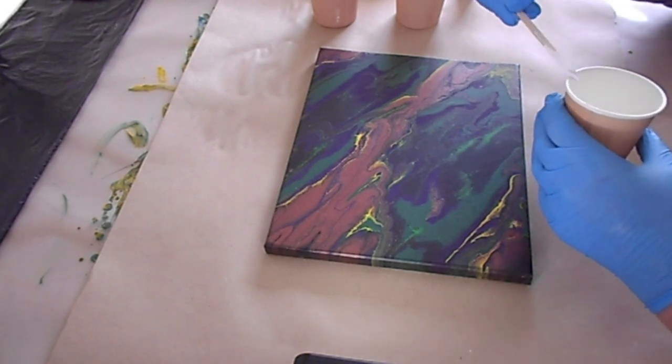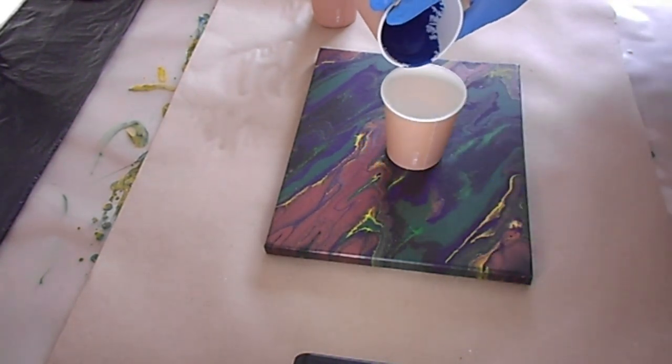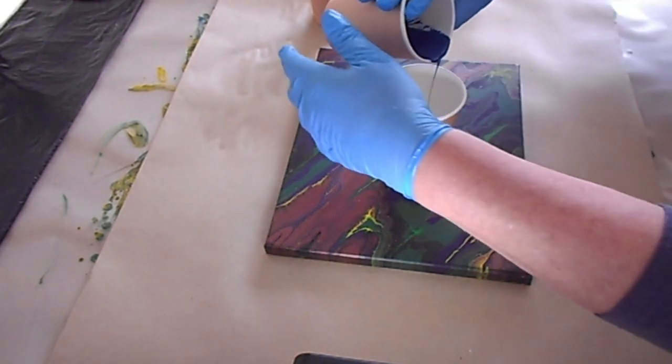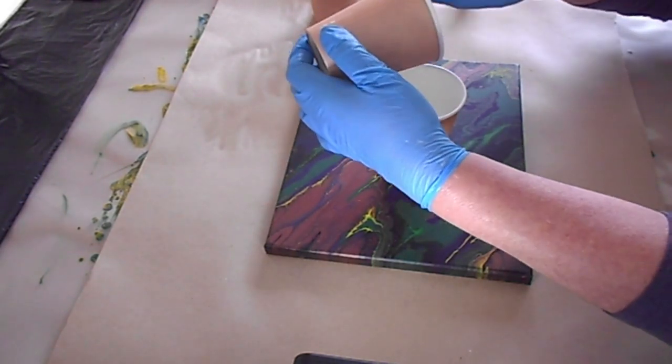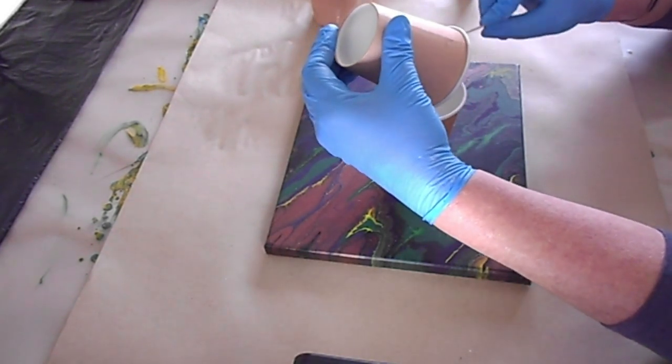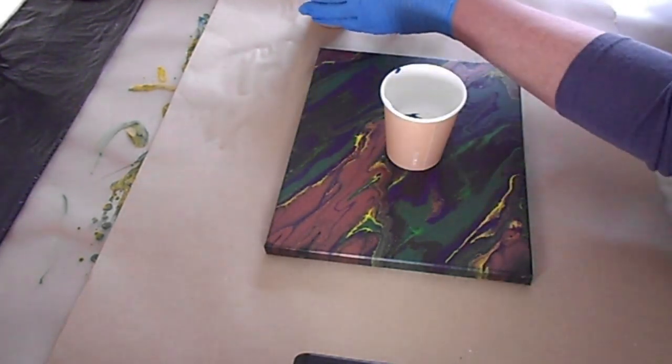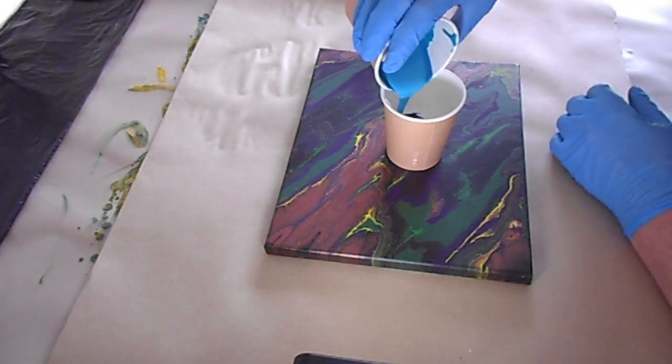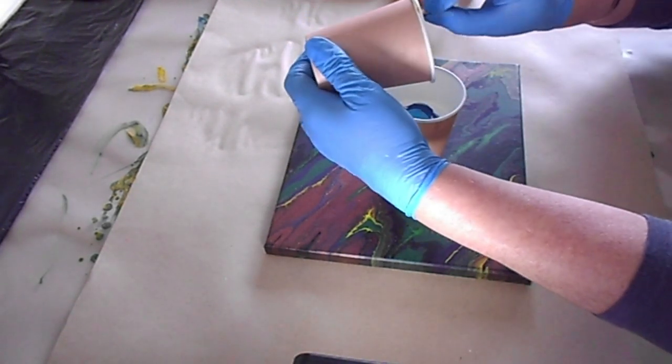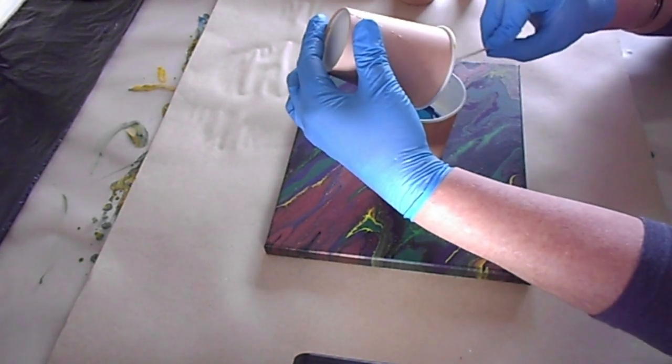And I'm going to be using three colors, so it'll be white and Prussian blue. So I'm just going to pull all of this in. So I'll just be doing a flip cup.